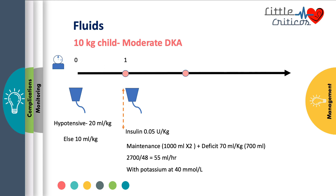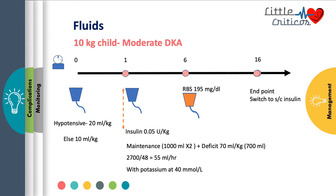We continue to monitor this child for decrease in glucose and closing of the anion gap with maintenance of osmolality. At 6 hours of hospital stay, if the blood glucose level drops below 250, IV fluids are changed and dextrose is added. We continue to monitor these children for resolution of DKA; majority of cases resolve within 24 hours of hospitalization. Once the endpoints of DKA are achieved, we switch over to subcutaneous insulin and start them on a diabetic regimen.